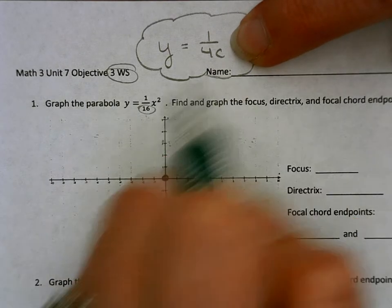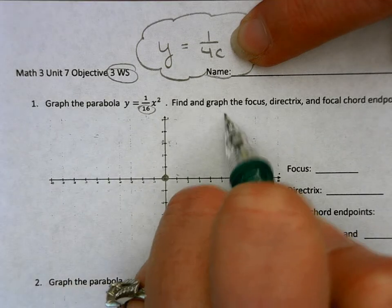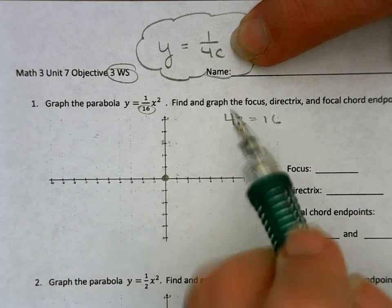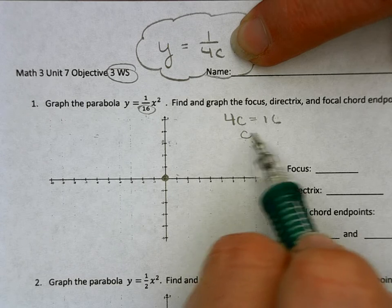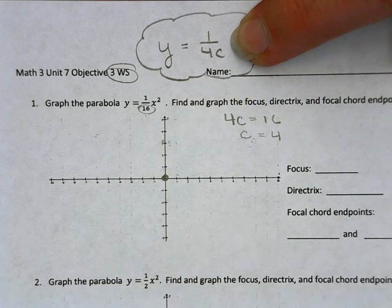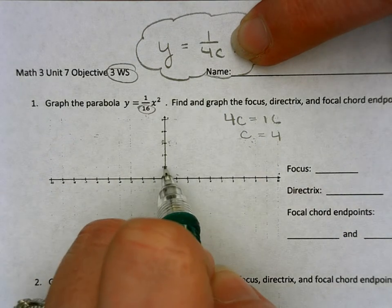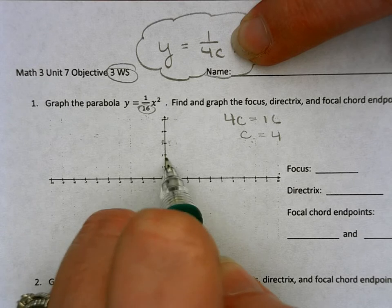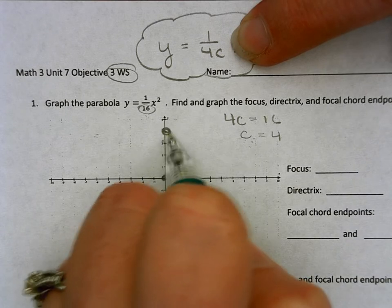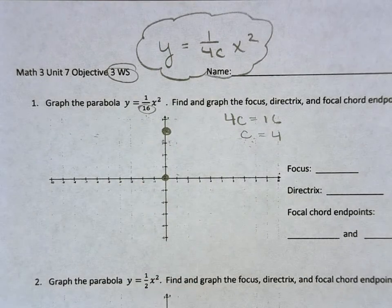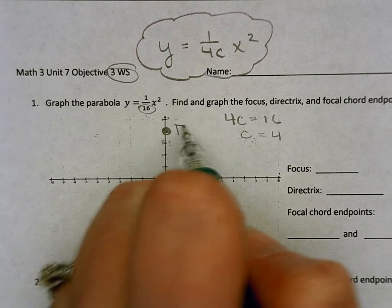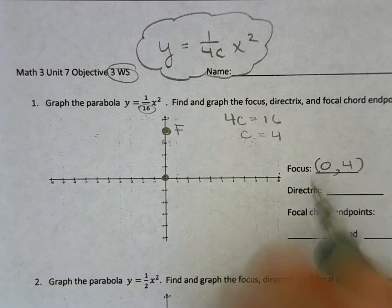So I just always set the 16. So 4c equals 16, and then divide both sides by 4. So c equals 4. So now I know where my focus is. I'm going to go up 4: 1, 2, 3, 4. And so there's my focus. So that ordered pair is at (0,4).